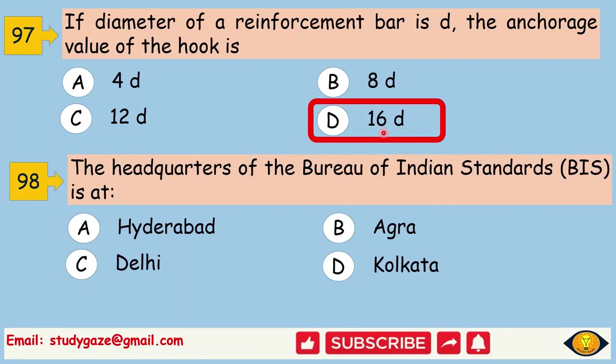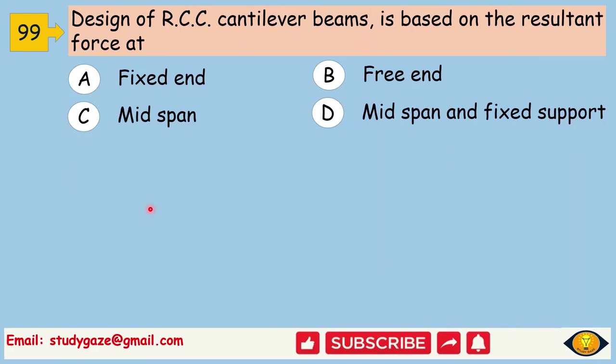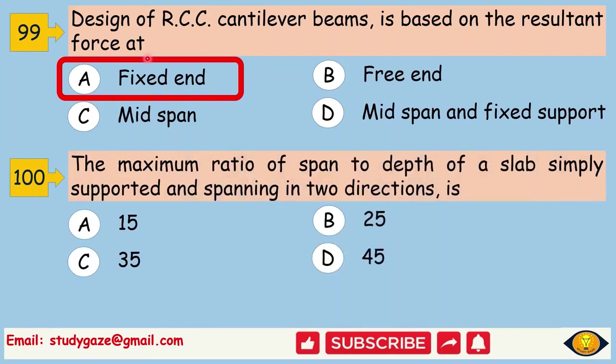The headquarters of the Bureau of Indian Standards is at. Answer is Delhi. Design of RCC cantilever beams is based on the resultant force at fixed end. The maximum ratio of span to depth of a slab simply supported and spanning in two direction is 35.